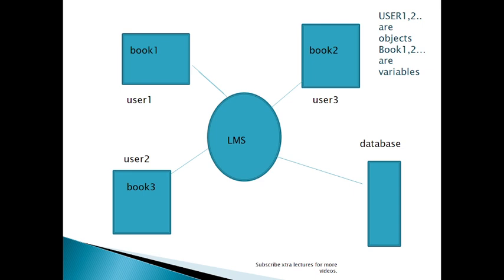With this diagram we will understand the model — what is the model in the object oriented approach. When User1 submits Book1, then Book1 will be free. The data from Book1 will be freed and assigned to the database. When User3 requests Book1 and it is free, it will be assigned. This means the communication between entities, or objects — how will two objects communicate in the object oriented approach model?